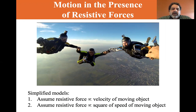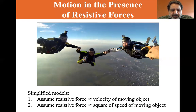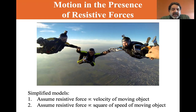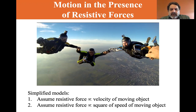The first model assumes the resistive force is proportional to the velocity of the moving object. The second model assumes the resistive force is proportional to the square of the speed — this applies at high speeds, such as skydivers moving through air, a bullet, or a baseball moving rapidly, experiencing a drag force.